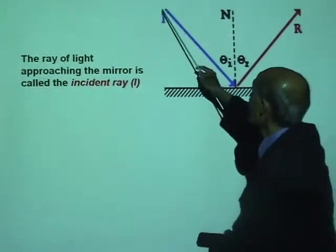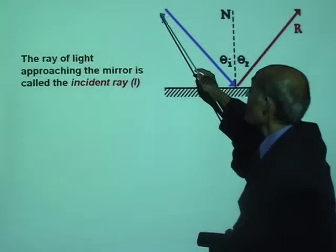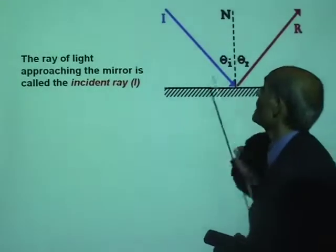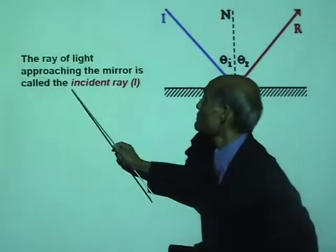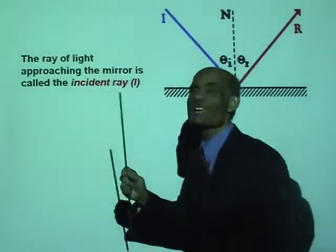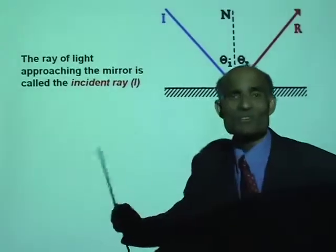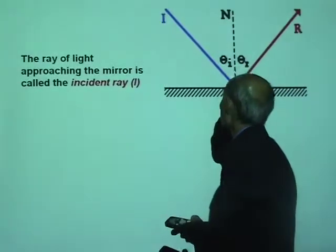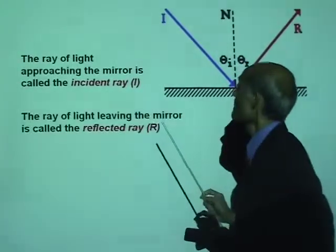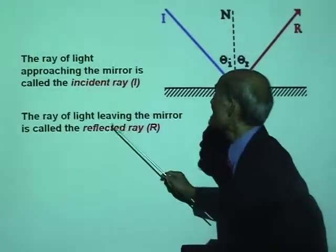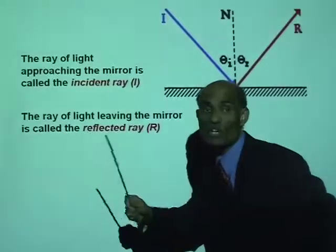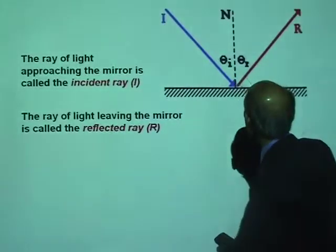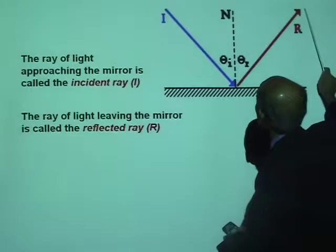The blue ray is the ray of light that is falling on the mirror, and such a ray is called the incident ray. Here I have an incident ray, and the ray of light leaving or reflected by the mirror is called the reflected ray.